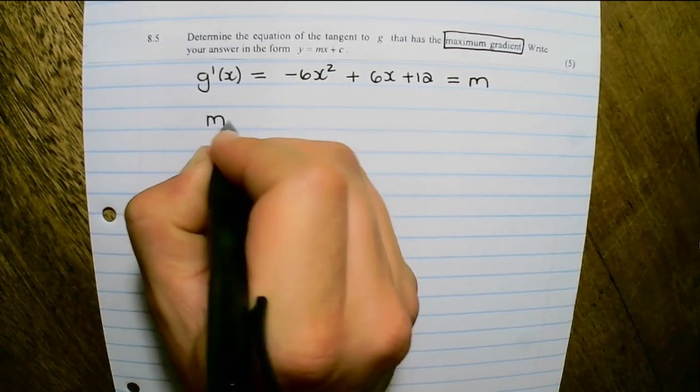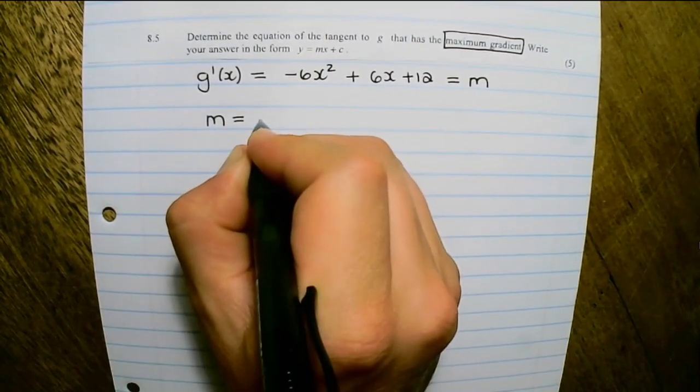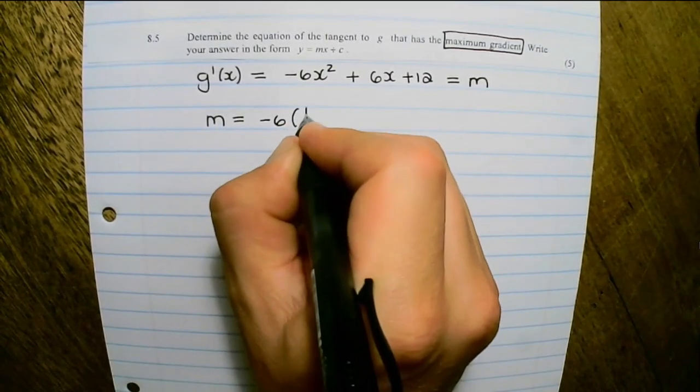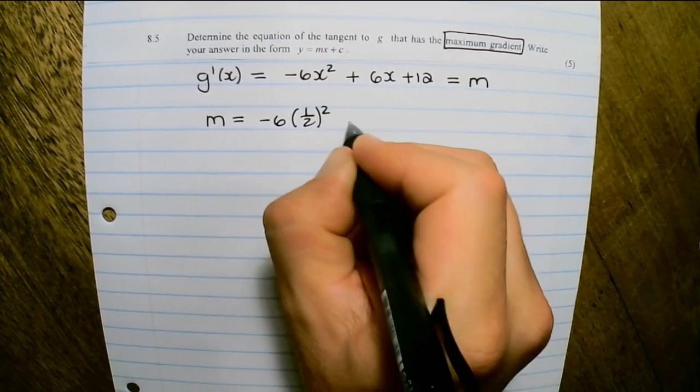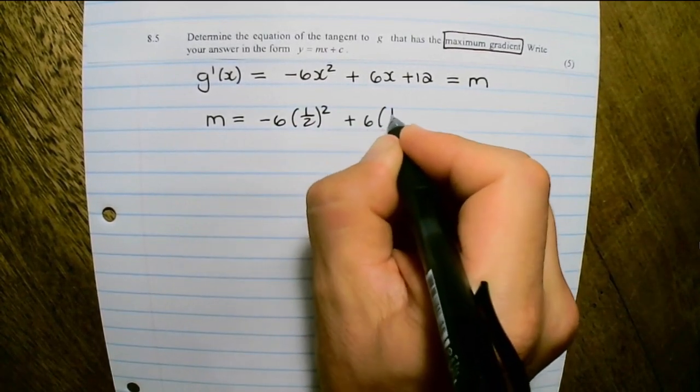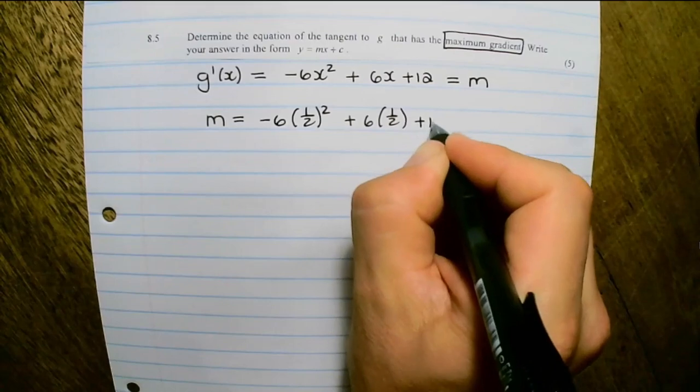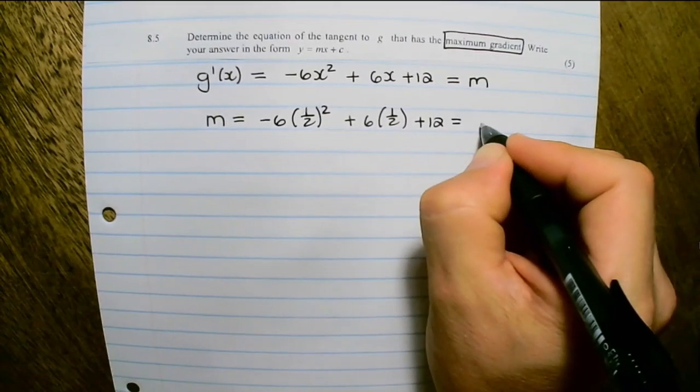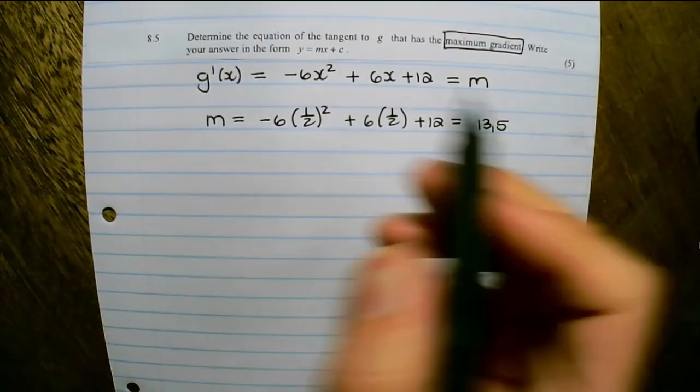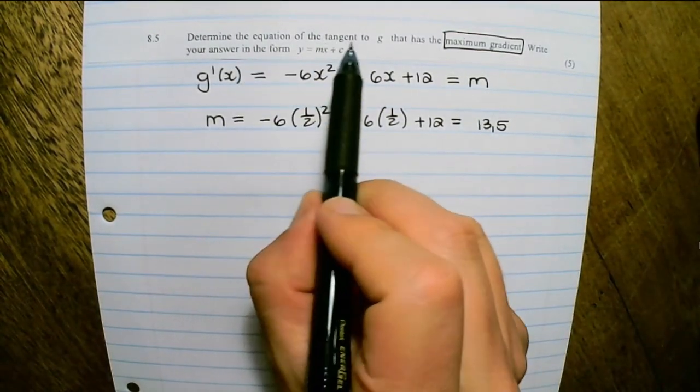So therefore, the maximum gradient would be negative 6 times one half squared plus 6 times one half plus 12, which equals 13 and a half.